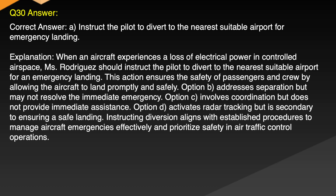Explanation: When an aircraft experiences a loss of electrical power in controlled airspace, Emes Rodriguez should instruct the pilot to divert to the nearest suitable airport for an emergency landing. This action ensures the safety of passengers and crew by allowing the aircraft to land promptly and safely. Option B addresses separation but may not resolve the immediate emergency. Option C involves coordination but does not provide immediate assistance. Option D activates radar tracking but is secondary to ensuring a safe landing. Instructing diversion aligns with established procedures to manage aircraft emergencies effectively and prioritize safety in air traffic control operations.